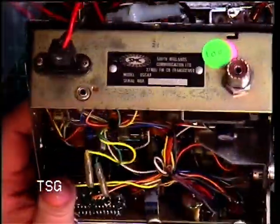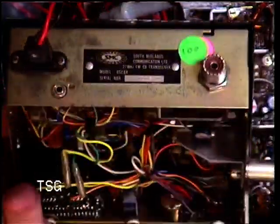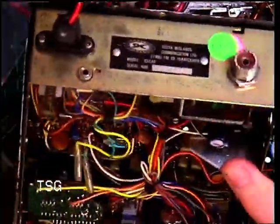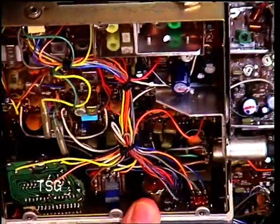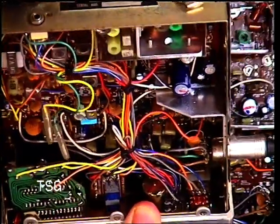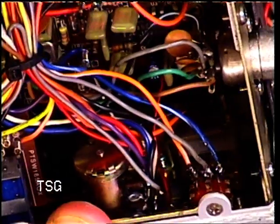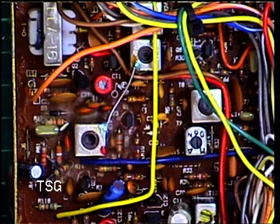So here's our identical one. And we've got, it's a double pole switch, but only one pole is used. Let's see whether we can see. We've got blue, grey, and orange with a white tracer. Blue, grey, and orange with a white tracer.